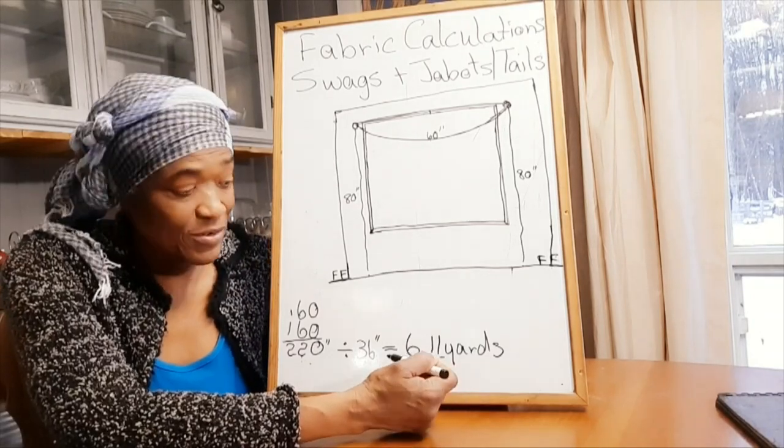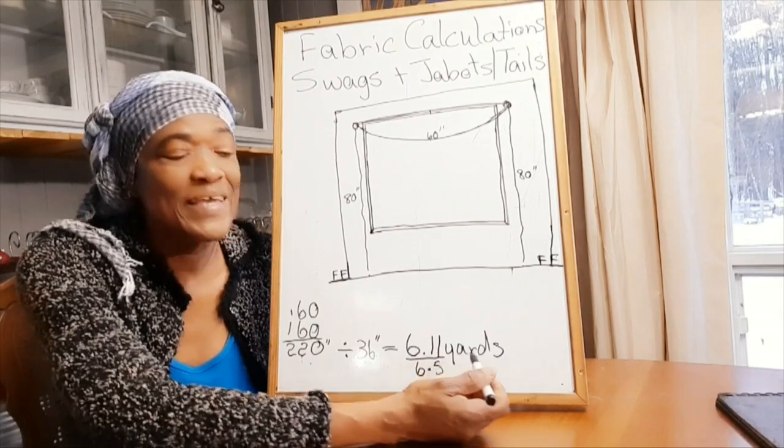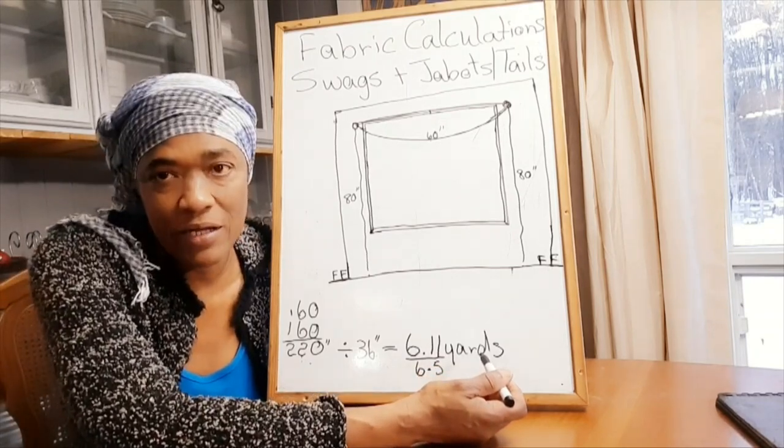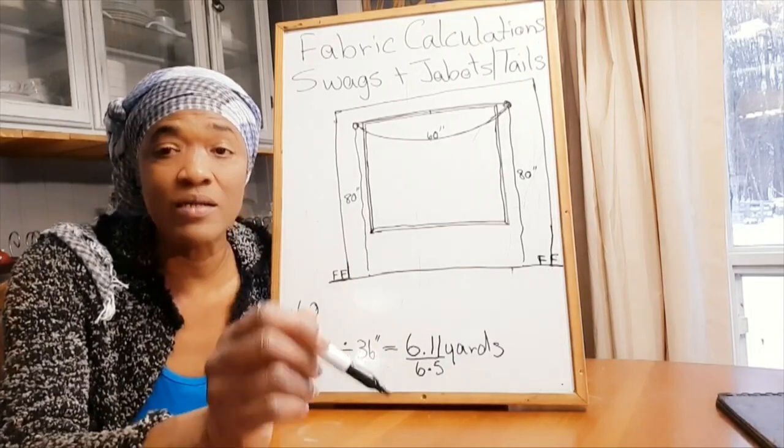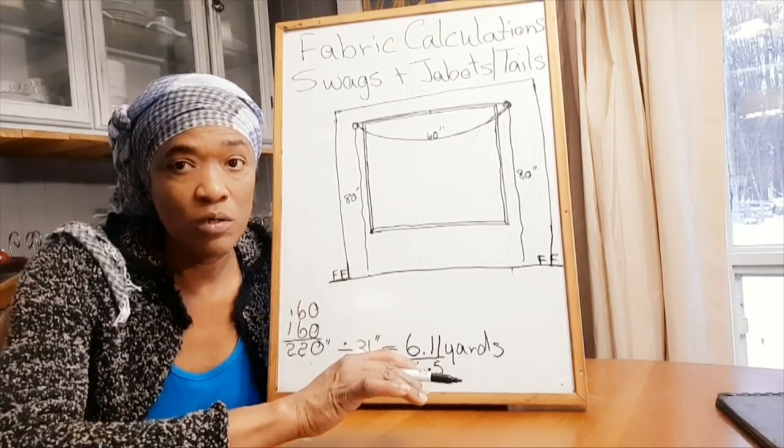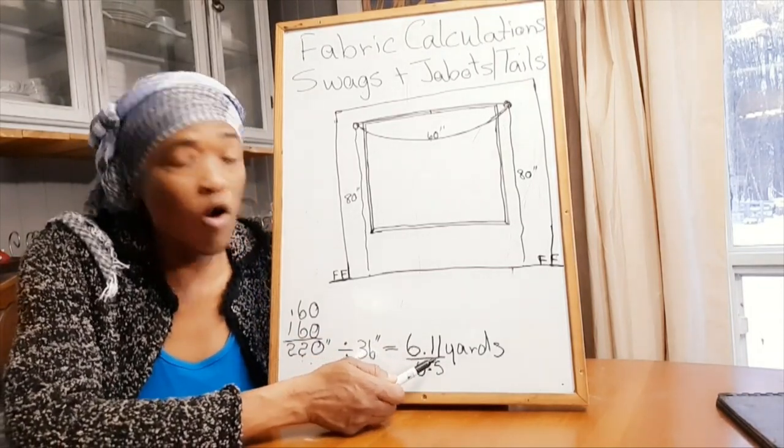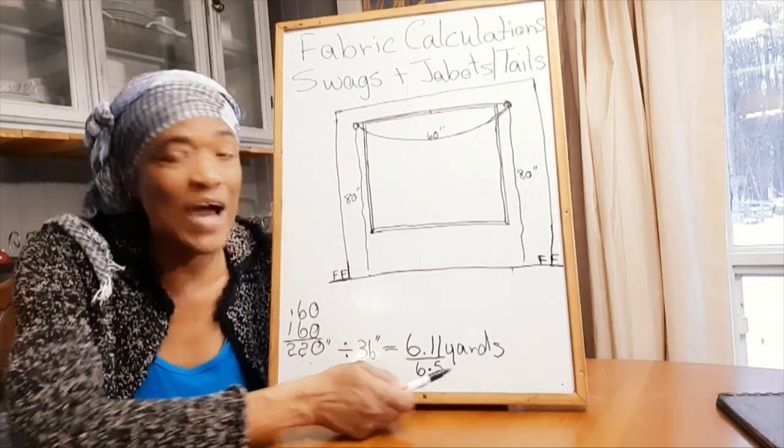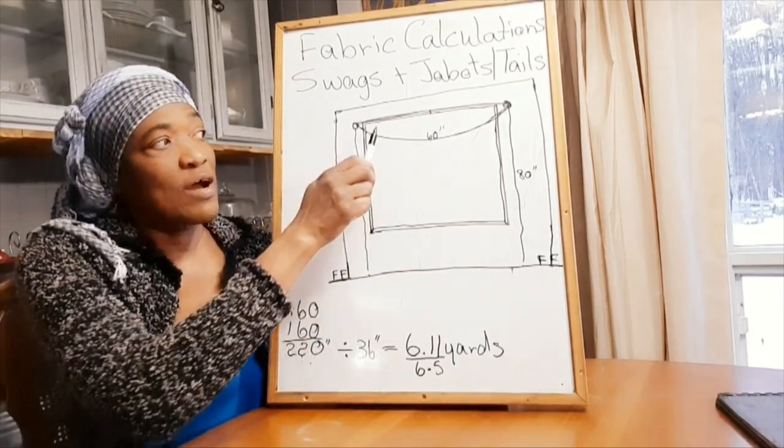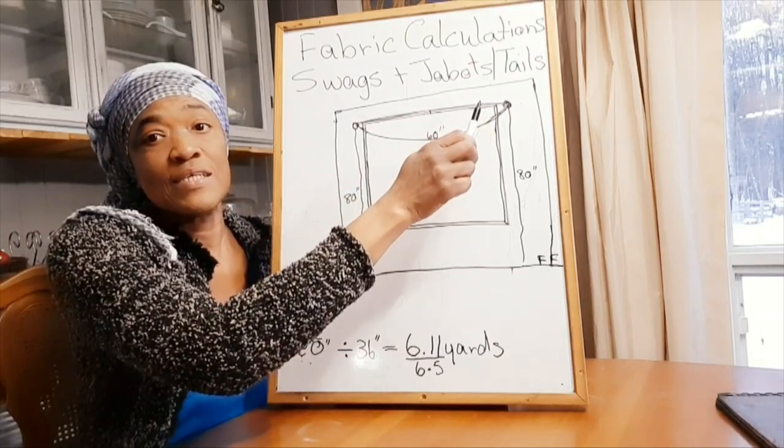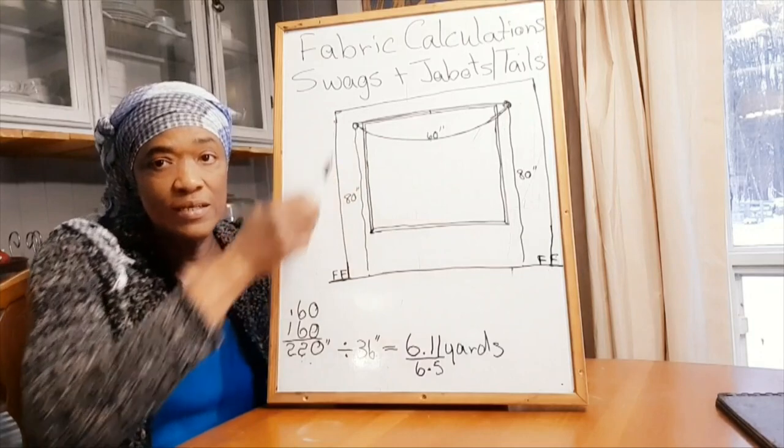When we divide by 36 inches, we get 6.11 yards of fabric. When you get point-whatever of fabric, never round down. For example, don't go down to 6 yards, go up to 6.5 yards of fabric. So for a window that's going to have a swag that's 60 inches across and tails that are 80 inches on either side, you would need 6.5 yards of fabric.